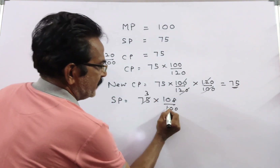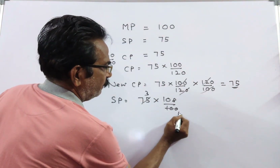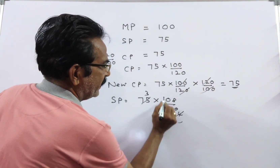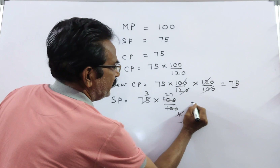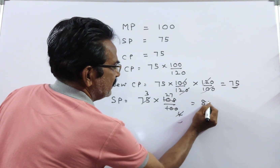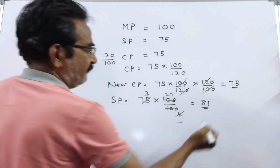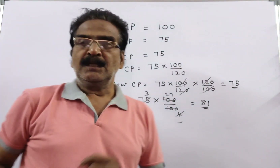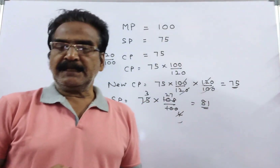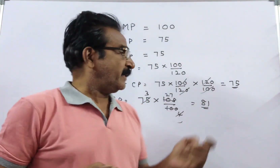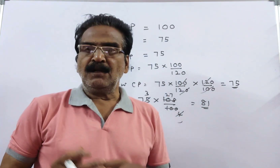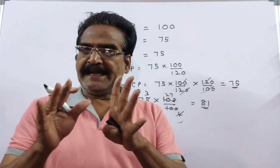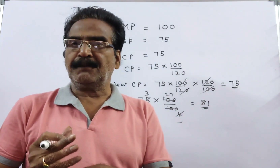Calculating: 75 × 108/100 gives us 81. So the article must be sold at a price of Rs. 81 to have 8% profit.